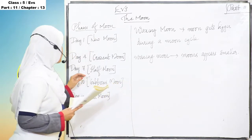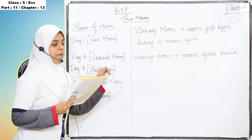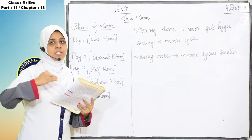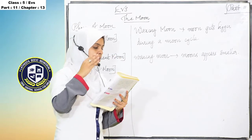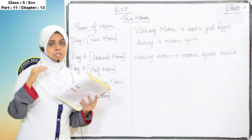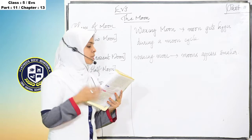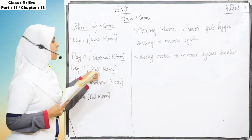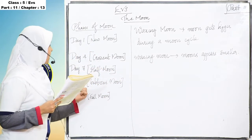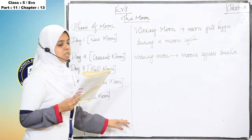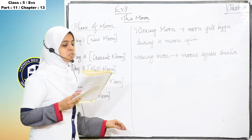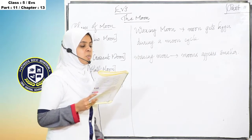The next phase is on day 7 — half moon. After half moon and before full moon, exactly when three-quarters of the moon's illuminated surface is visible from the earth, that is the gibbous moon phase on day 10.